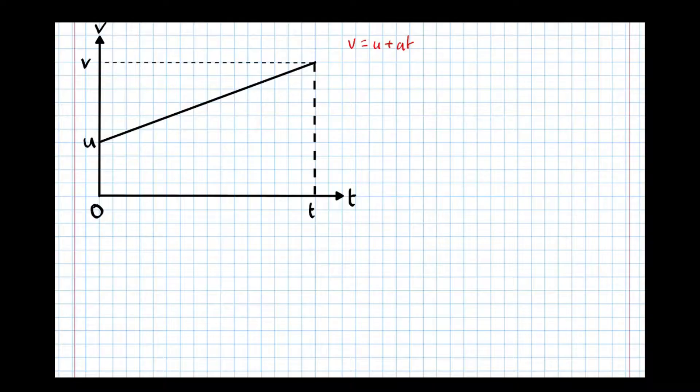So let's have a look at V equals U plus A T. First of all, we know the gradient of this line segment here is the Y difference over the X difference. So the gradient on a VT graph is acceleration. The gradient acceleration equals the Y difference, so V minus U, over the X difference, which is T minus 0, which is T.